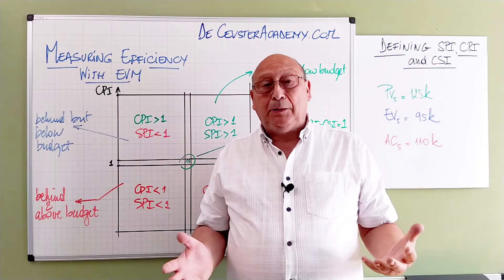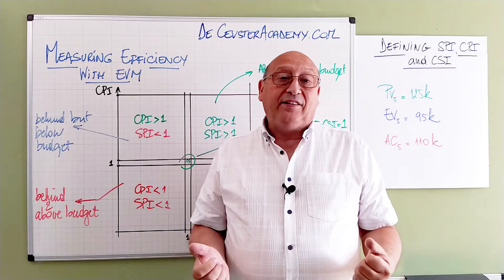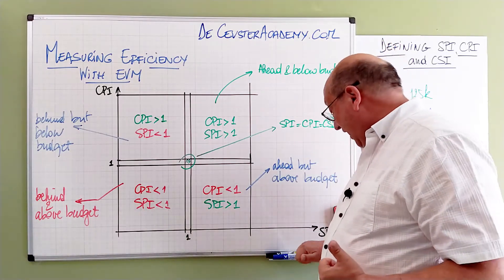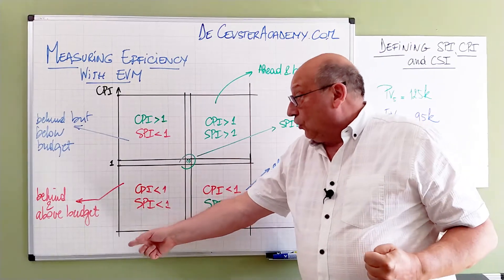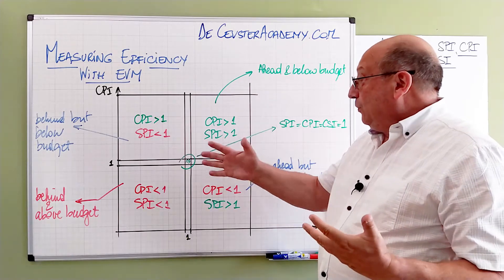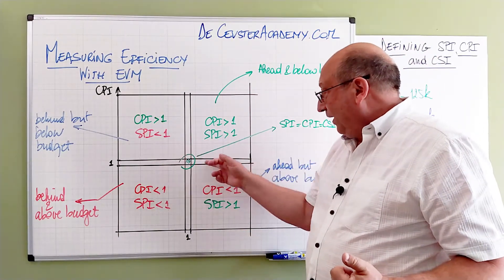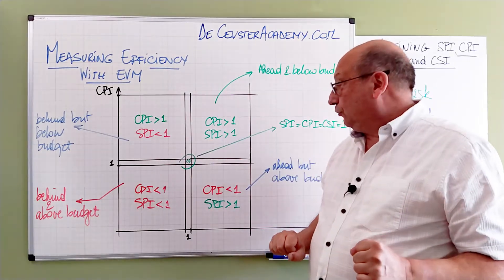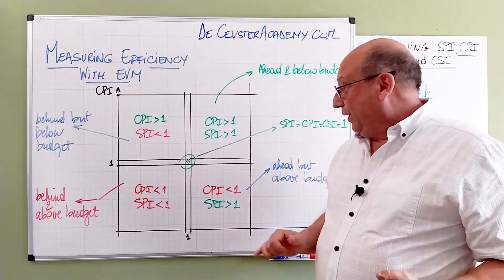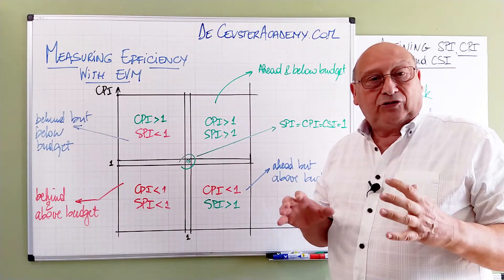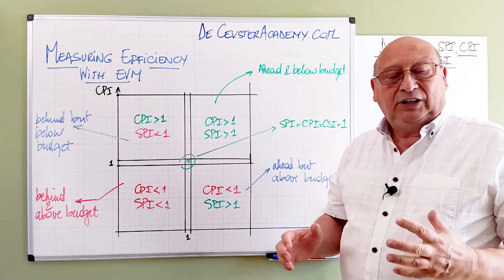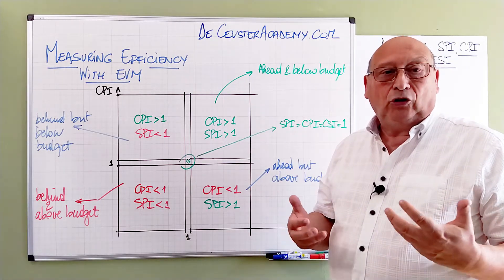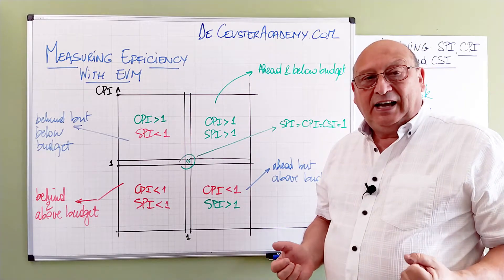We can look at the combined effects of SPI and CPI in a matrix. On the horizontal axis we have the SPI, and on the vertical axis we have the CPI, creating four quadrants. The most important reference point is where the SPI equals one and the CPI equals one — the cost schedule index is also equal to one, which means we are on budget and on schedule.